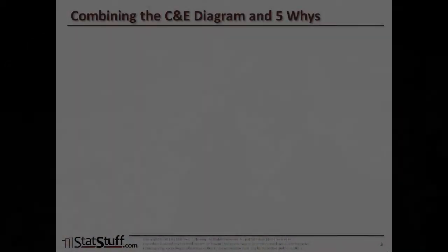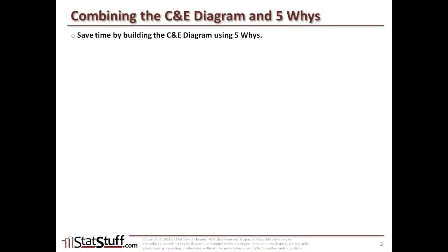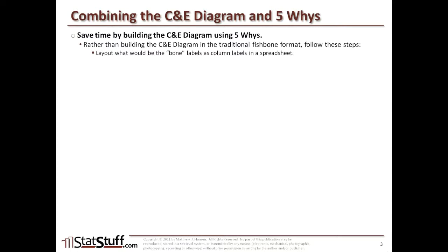Now let's talk about how we can combine the C and E diagram and 5Ys into a single step for identifying all potential root causes. I believe we can save a lot of time by building the C and E diagram and the 5Ys together. So rather than building just the C and E diagram in the traditional Fishbone format, the suggestion I would offer is that you follow these next few steps to show how you can do them together with the 5Ys tool.